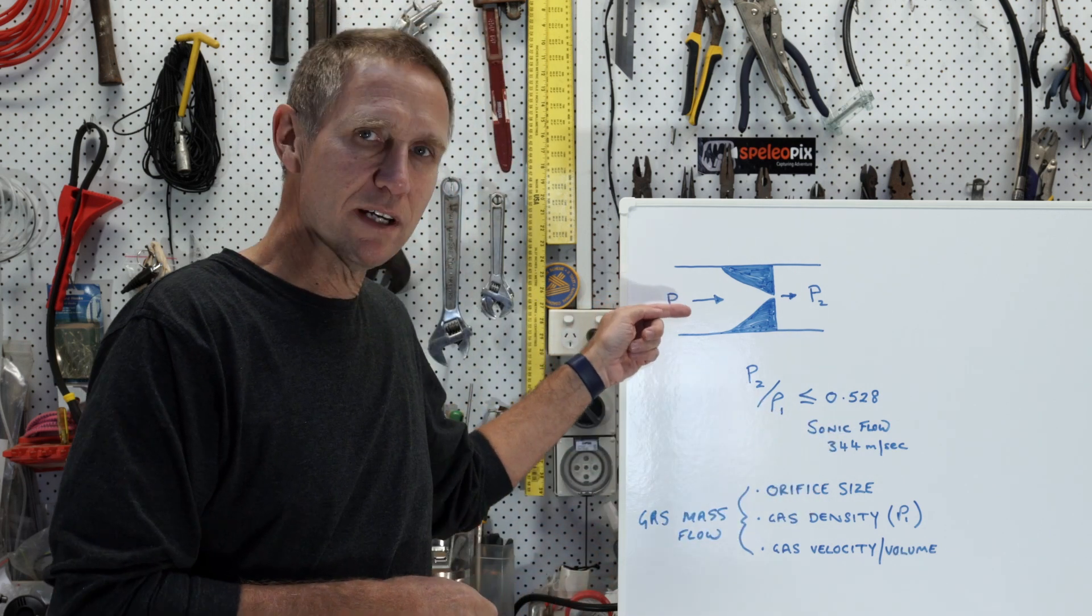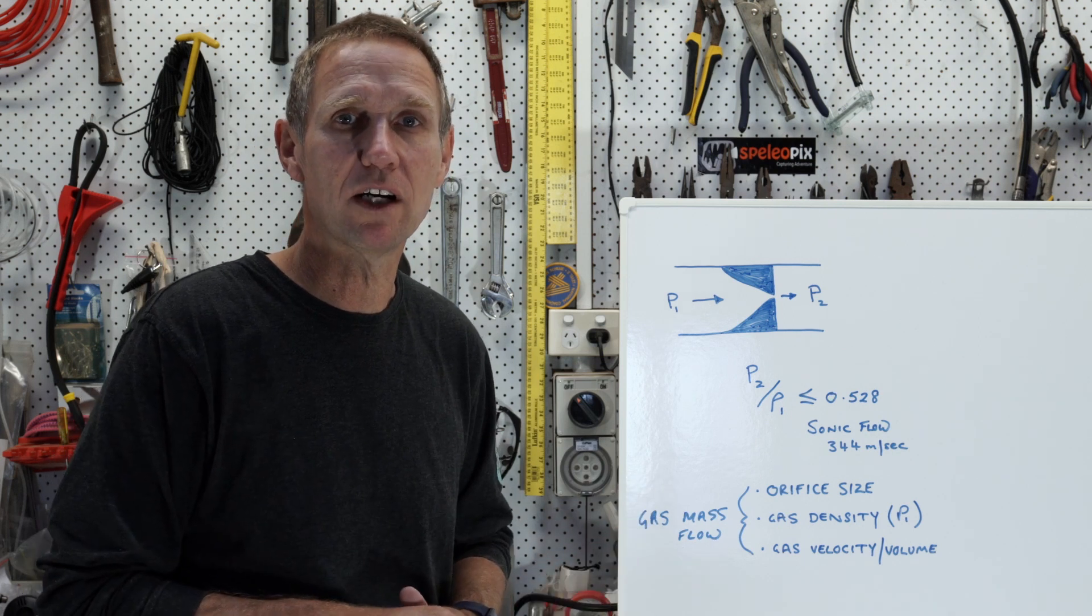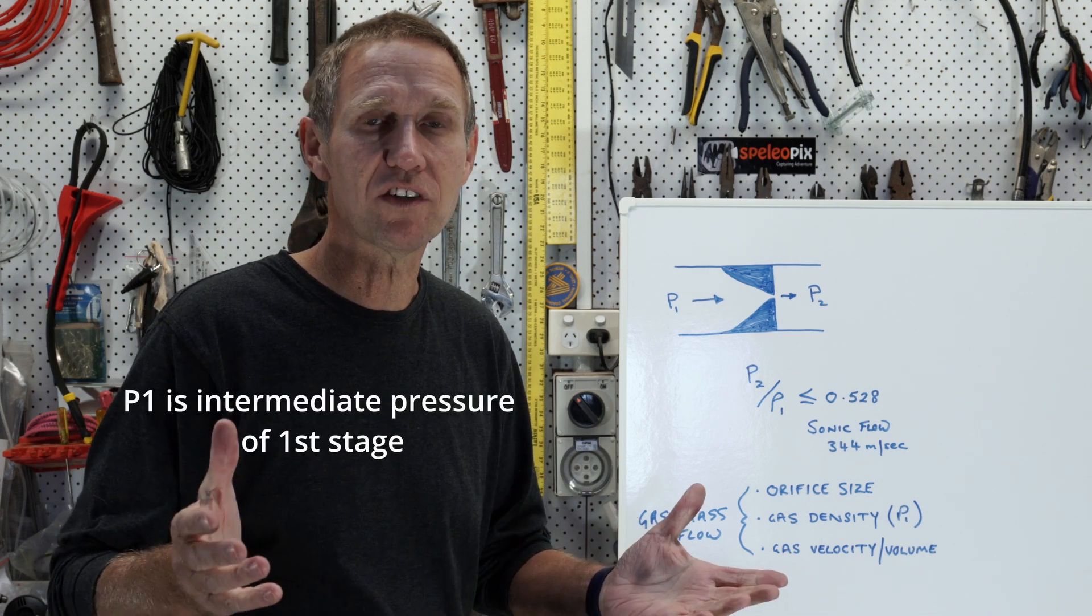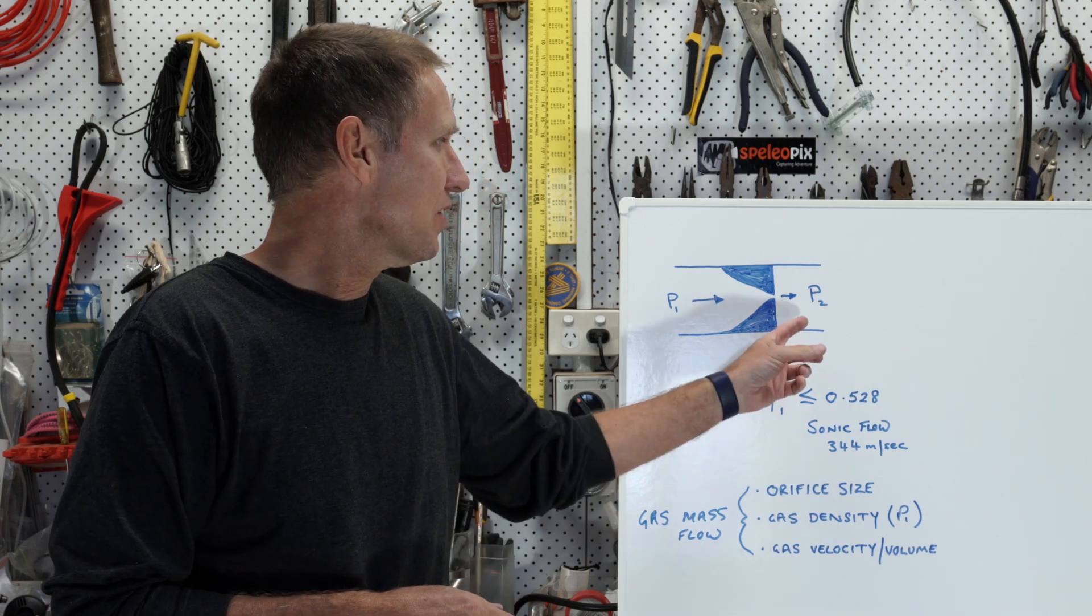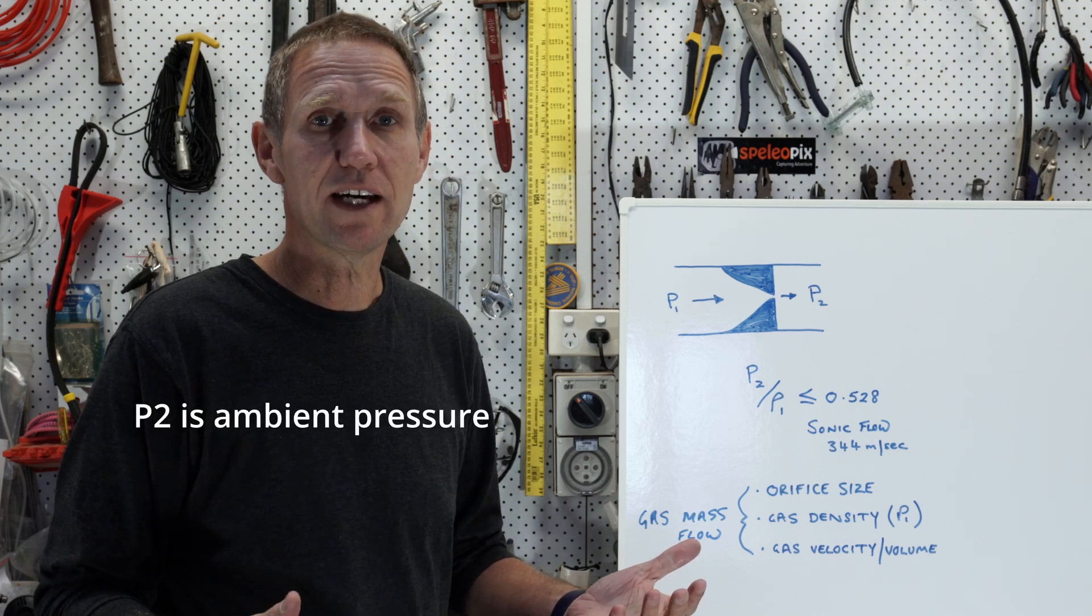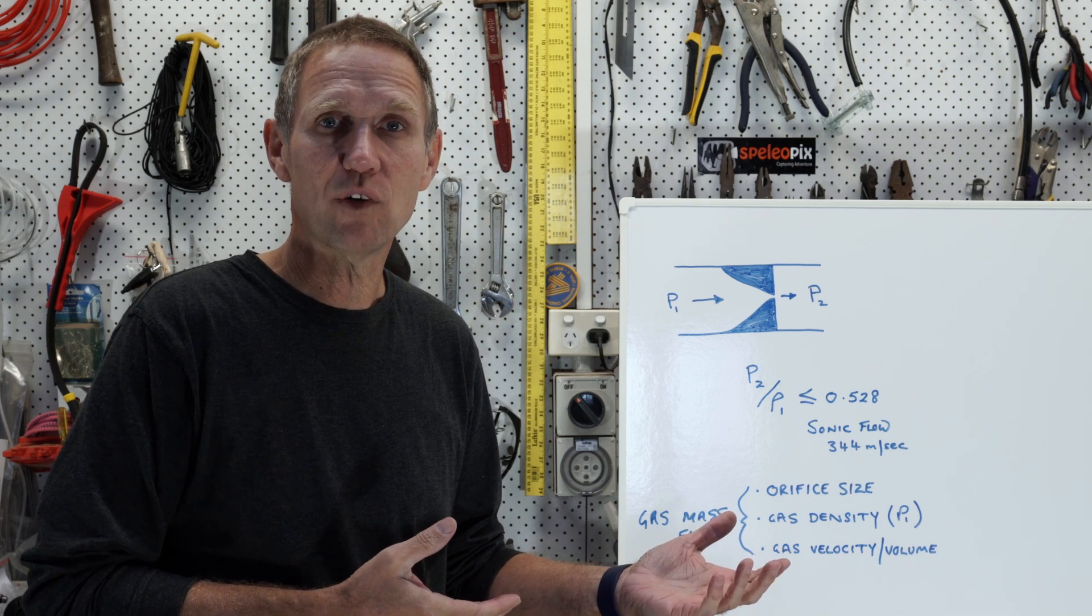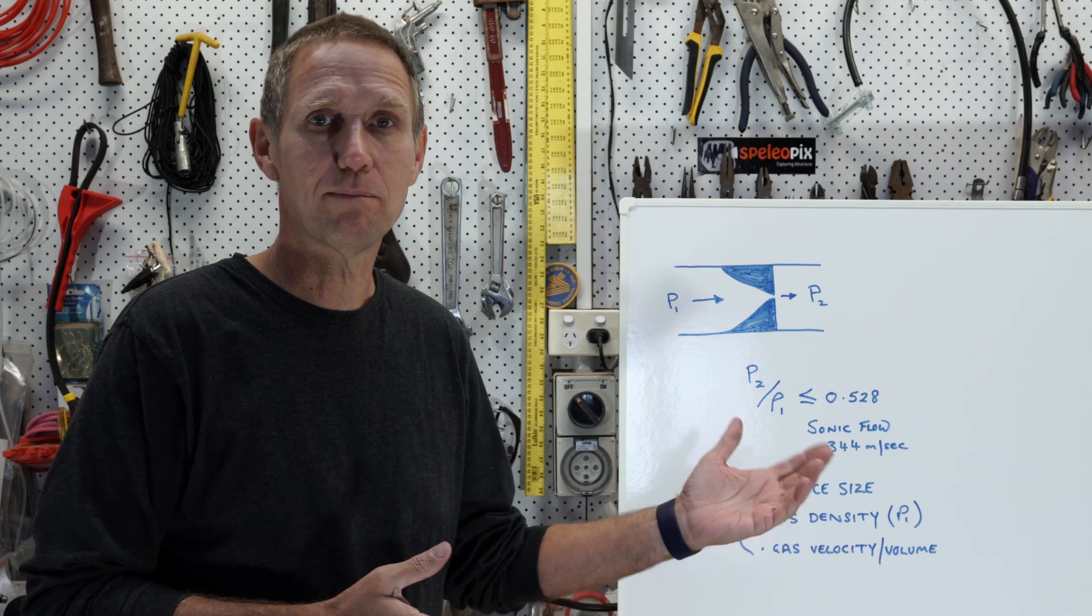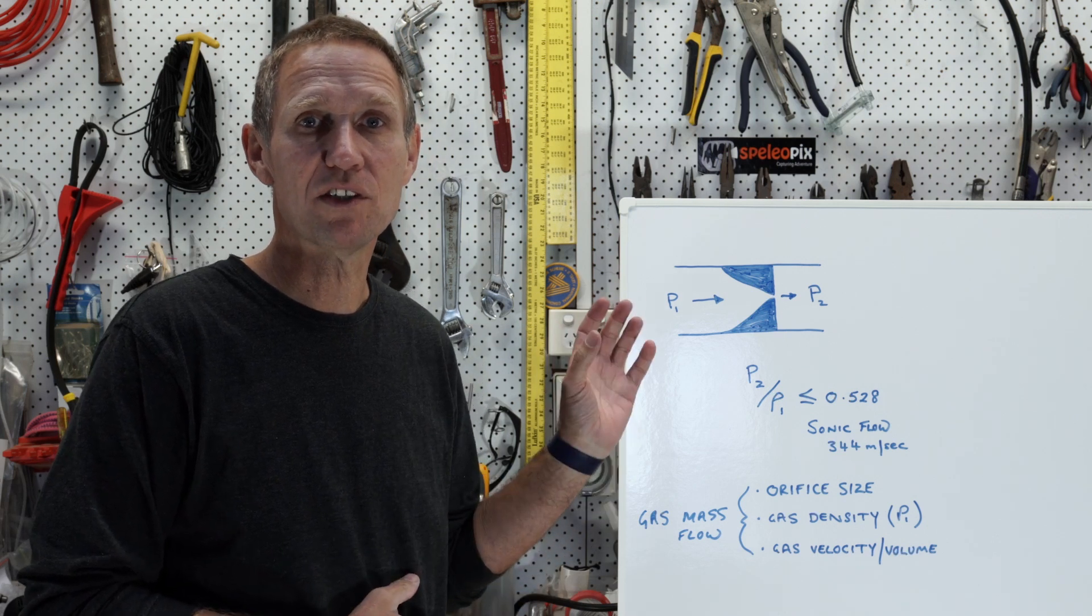So on the upstream side of the orifice, we have P1, which is the pressure being supplied to the orifice. Now that pressure is set by the intermediate pressure of the regulator. Let's call it 10 bar, which is a simple number. Now on the other side of the orifice is P2, which is the ambient pressure. So if I activate a KISS valve on the surface here, with a regulator that has an intermediate pressure of 10 bar, the atmospheric pressure here, P2, is 1 bar. So the ratio of those two pressures will be 10 to 1.